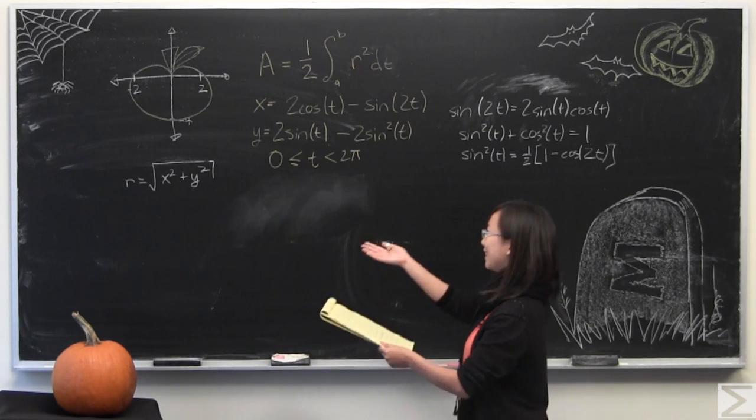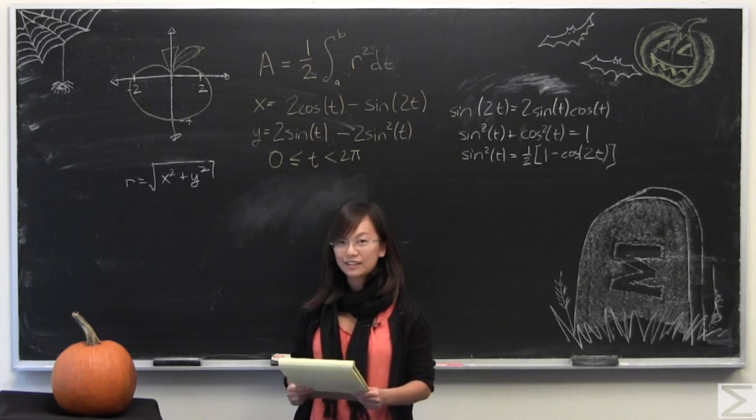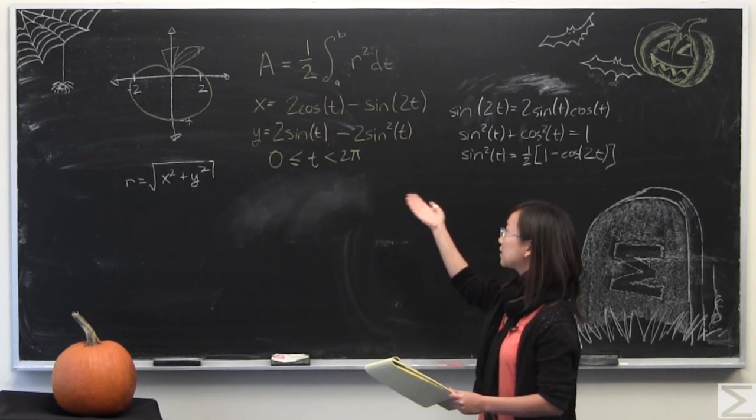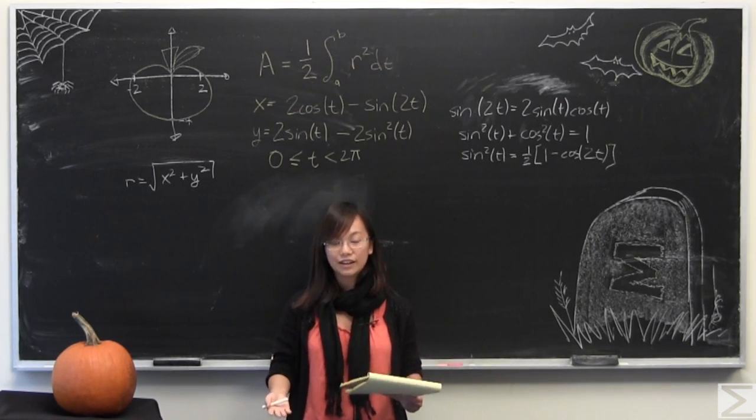So this week's problem of the week, Halloween themed, I give you this pumpkin looking graph and I give you the parameterization of this graph with x and y and t ranging from 0 to 2π and I ask you to calculate the area of it.